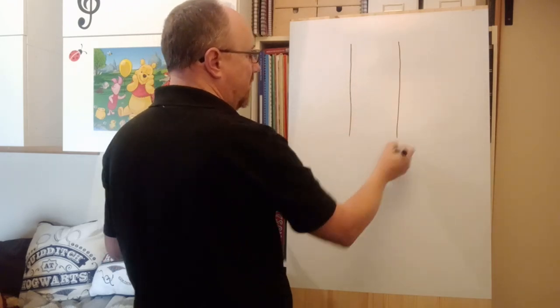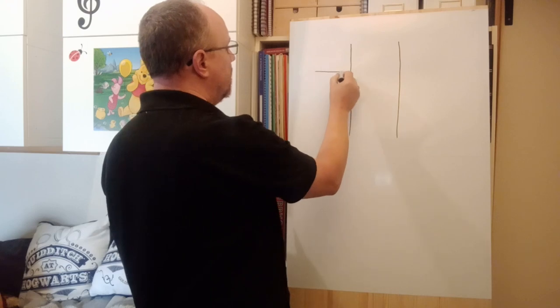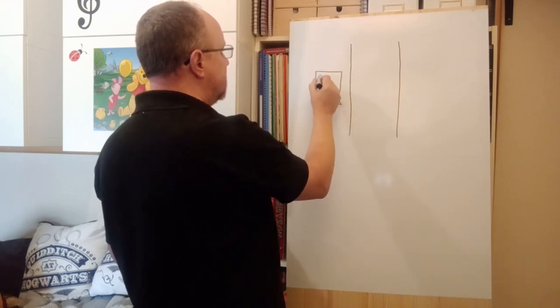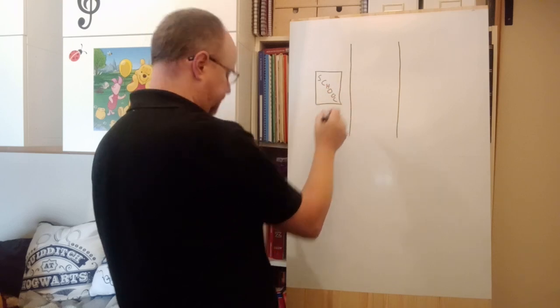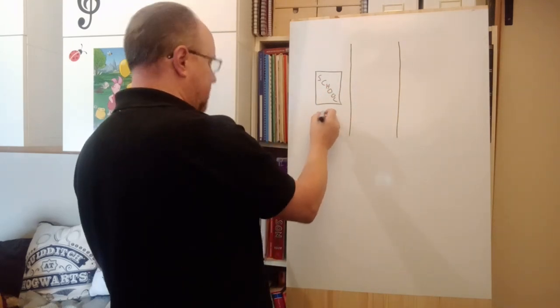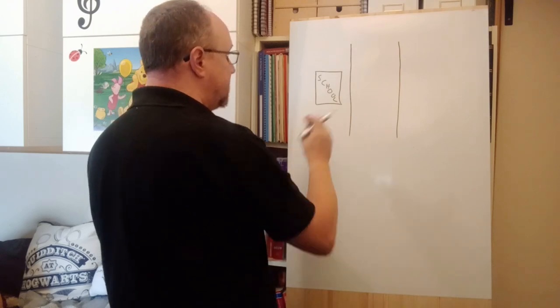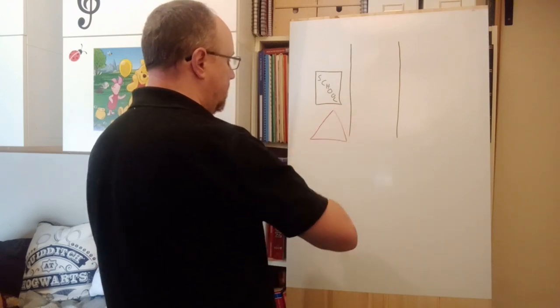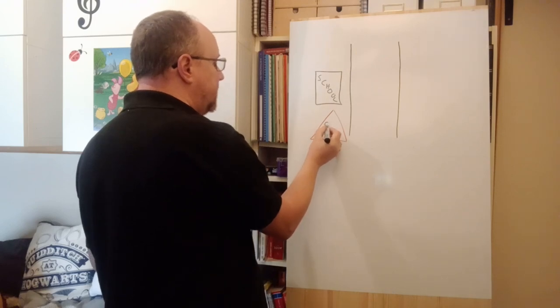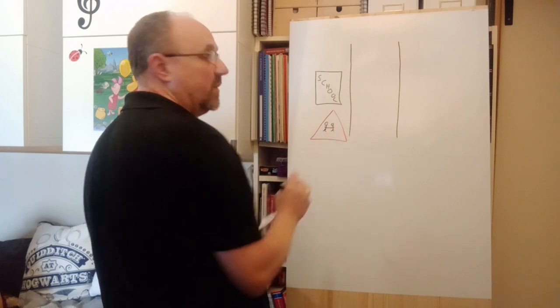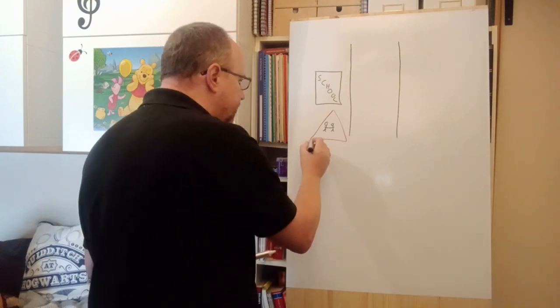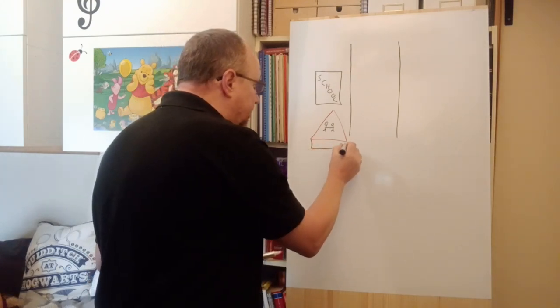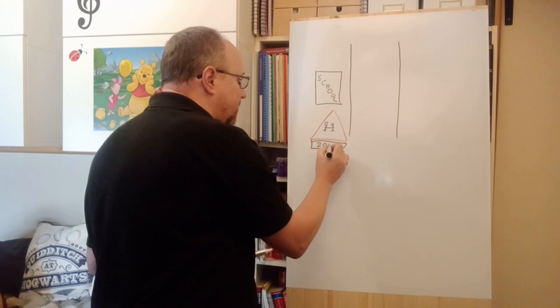So here we have another road, and this is a school. We have the warning sign to say there are children around. Let's try and draw that - so that is the sign with two children holding hands. Consider the time of day. Let's say under here we have 20 miles an hour.